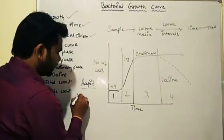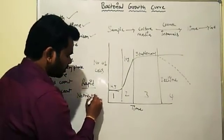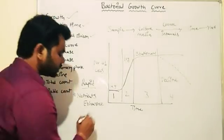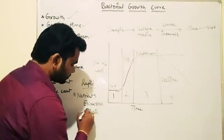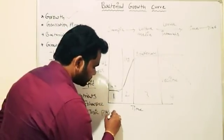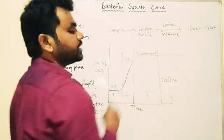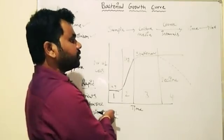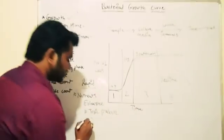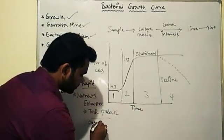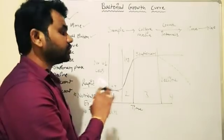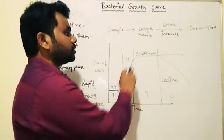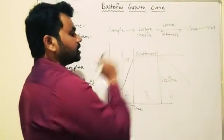In the stationary phase, all the nutrients will get exhausted and toxic products will accumulate. As a result, there will be no cell division, and the newly formed daughter cells are only sufficient to replace the dead cells. So there will be no increase or decrease in cell count during the stationary phase, which is why it is called the stationary phase.